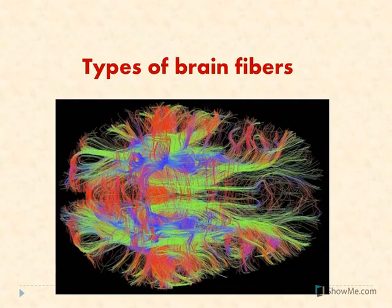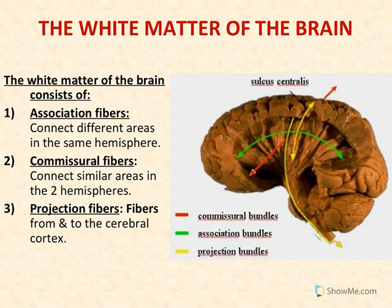Fibers inside the brain are of two types: either white or gray matter. The white matter of the brain occurs in three types: association, commissural, or projection fibers. Association fibers connect different areas in the same cerebral hemisphere. Commissural fibers connect the same areas on the opposite cerebral hemisphere. Projection fibers are the ascending or descending fibers to or from the cerebral cortex.